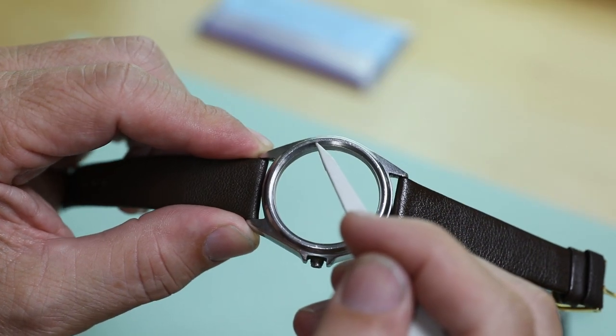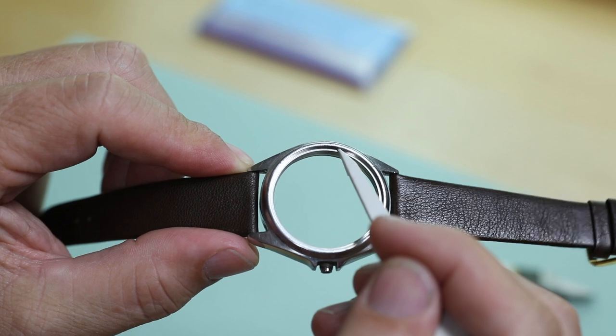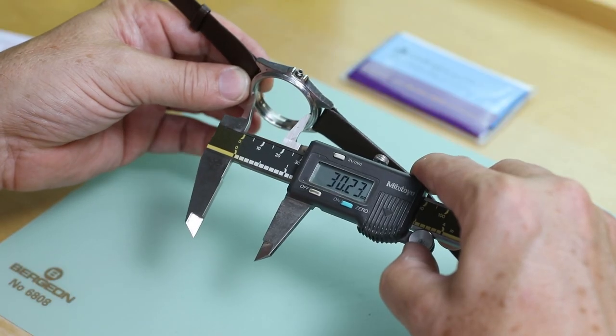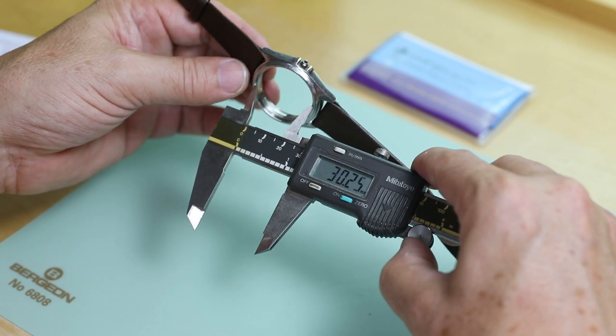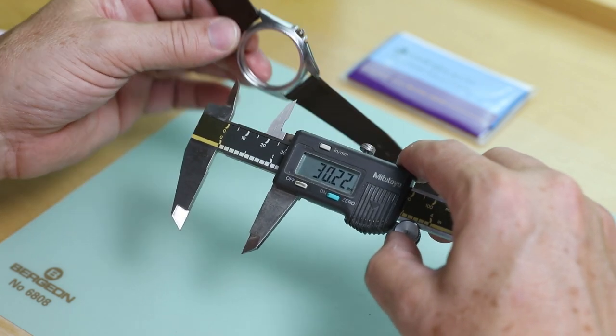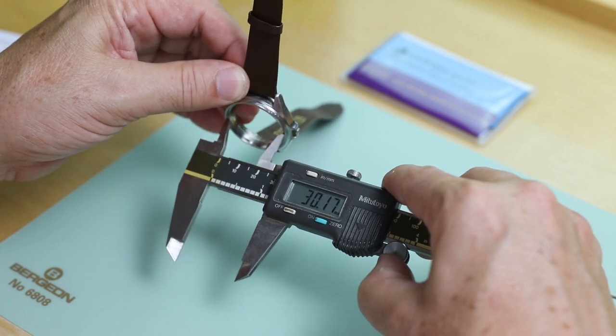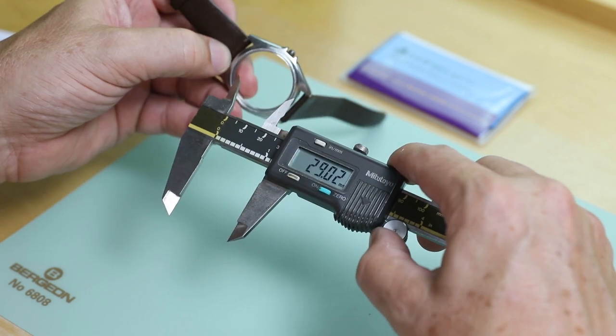There's a step ledge at the bottom of the bezel where the crystal and gasket will sit. The inside of the wall above this ledge is what you will measure. Insert the caliper into the step and take the measurement in two or three different places to get the most accurate measurement. Be sure to round to the nearest one-tenth of a millimeter.